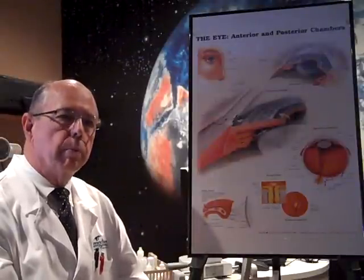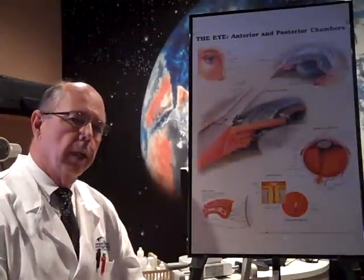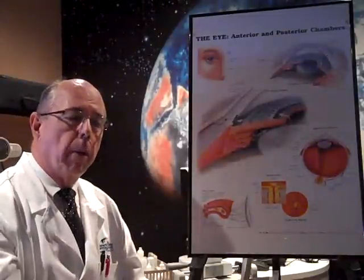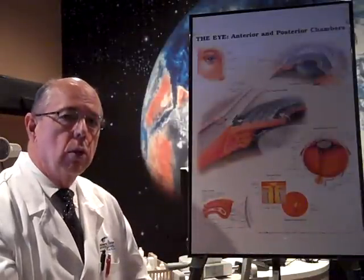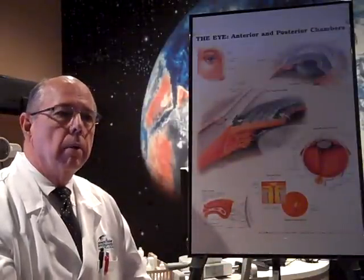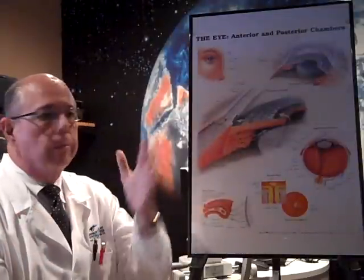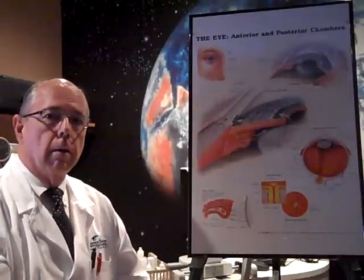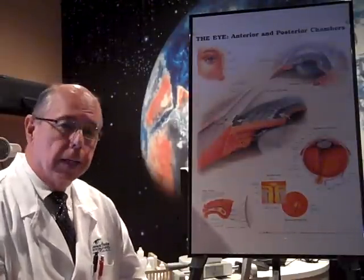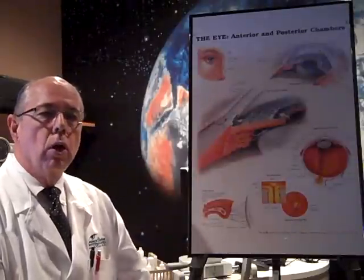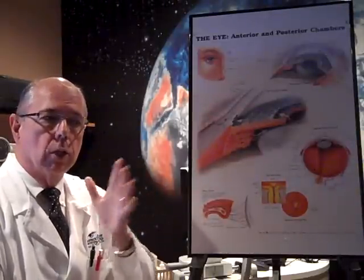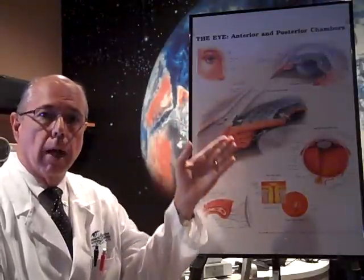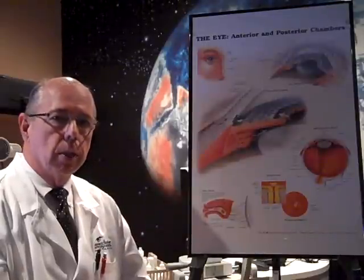Glaucoma doesn't cause symptoms because it slowly causes damage to that nerve, and you lose tiny little pieces of your side vision slowly over months or even years. You don't notice any symptoms — it's so slow that almost nobody comes into my office saying they think they've lost their side vision. You learn subconsciously to turn your head more because that vision is missing, or your brain learns to move your eye over, and you learn to compensate for it.